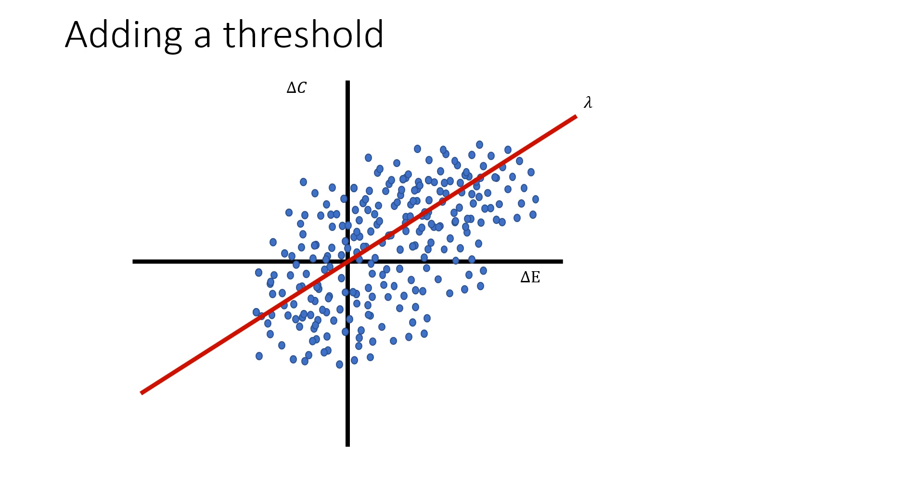The way that we're supposed to conduct ourselves around this uncertainty is through the use of a threshold which tells us what portion of these simulations is cost effective versus what portion is not cost effective, with those points lying below and to the right being cost effective and those lying above it being not cost effective.